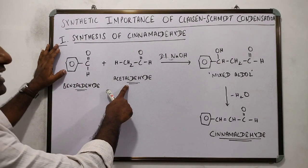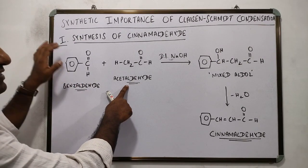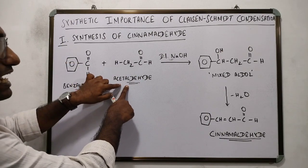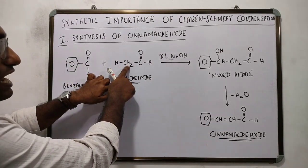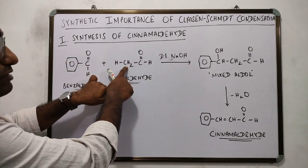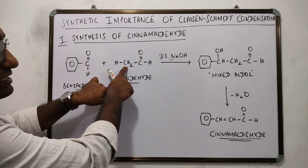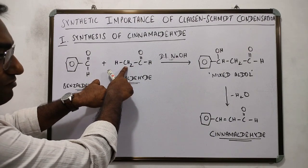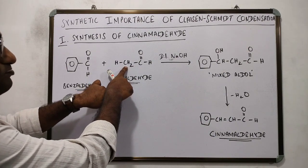Acetaldehyde, which is an aliphatic aldehyde with three alpha hydrogen atoms, is the second reactant. The minimum requirement is only one alpha hydrogen atom.